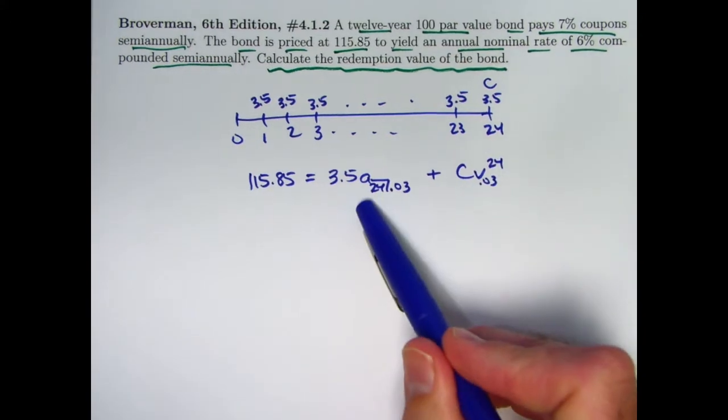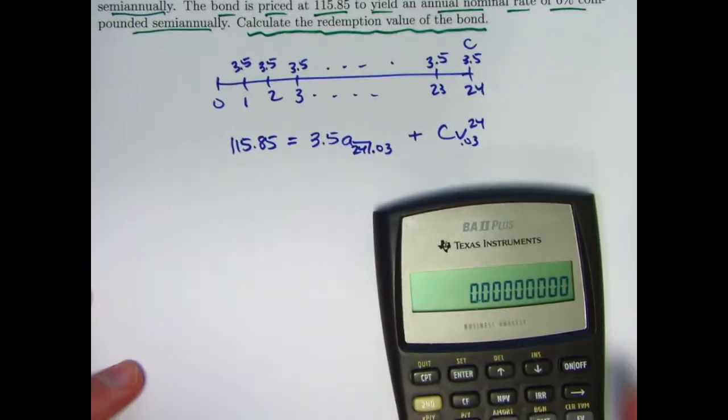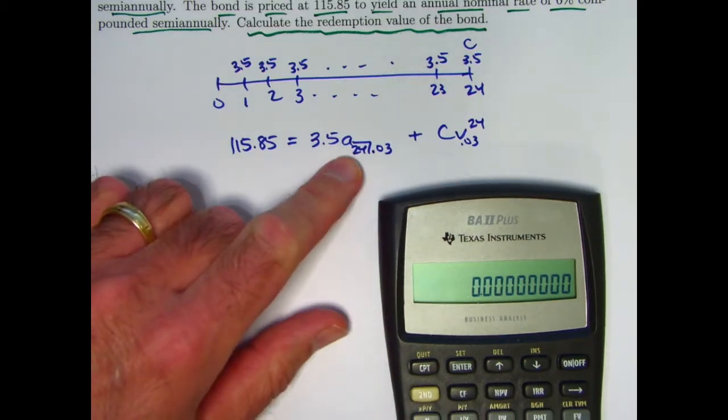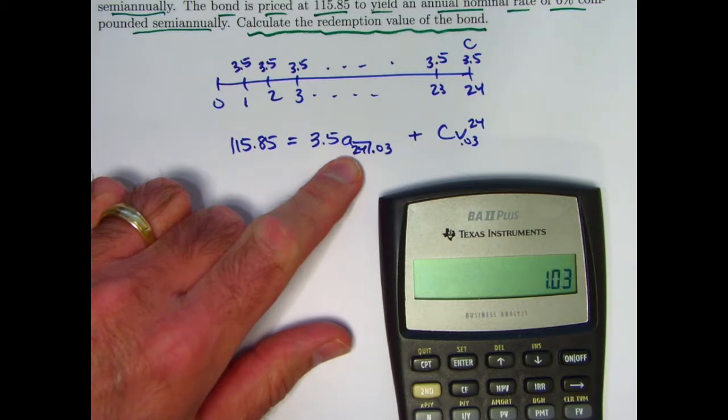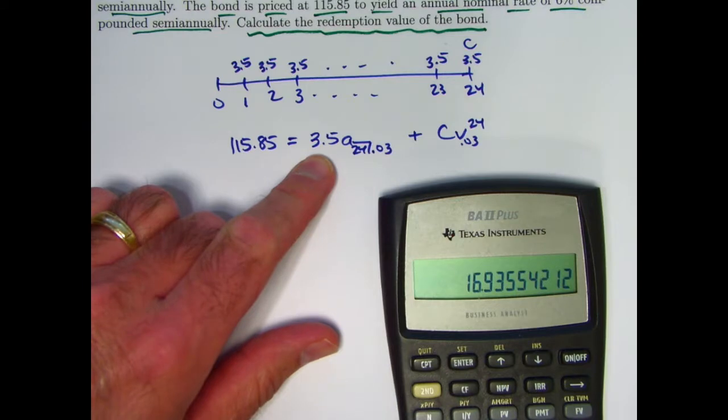Okay, so we need to evaluate this value and that value and then solve for C. I think since this is a fairly short video, I'll also solve it thinking about future values too. Let's calculate this present value. Take 1.03 reciprocal, raise it to the 24th power, subtract from 1, divide by 0.03 times 3.5.